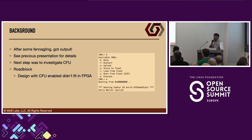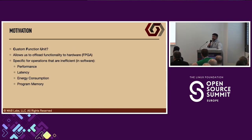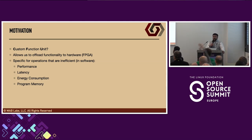The next thing I wanted to investigate was the CFU in RISC-V, since this implementation was basically a RISC-V core. This custom function unit was pretty interesting, but I couldn't pursue it because the FPGA I selected didn't have enough resources to fit a design with the CFU enabled. So this was the motivation for this particular talk. The CFU is a feature in the RISC-V ISA that allows us to offload functionality normally done in software to hardware for performance improvements — whether that be performance, latency, energy consumption, or program memory — by implementing features in hardware and enabling hardware-software interaction so the CPU can leverage those functions within the FPGA.